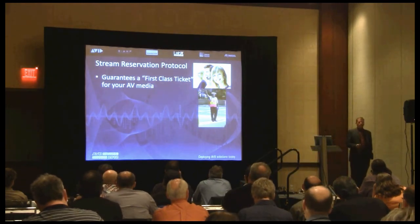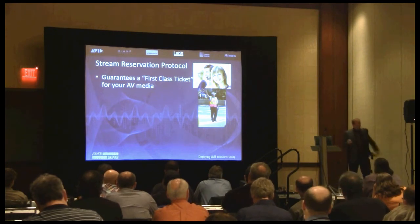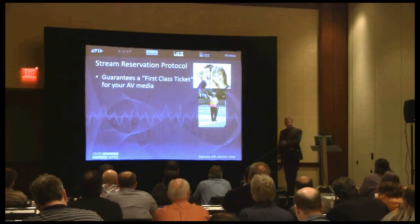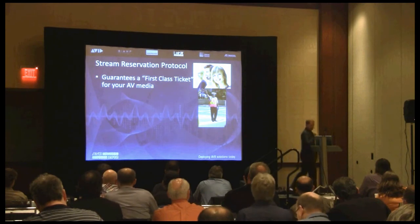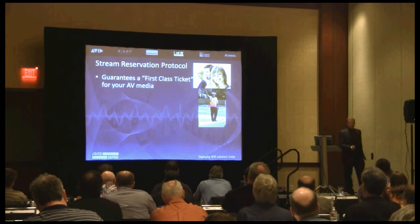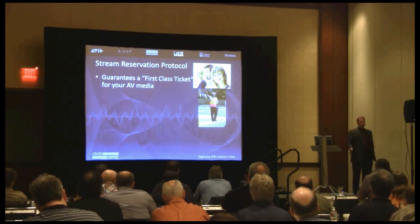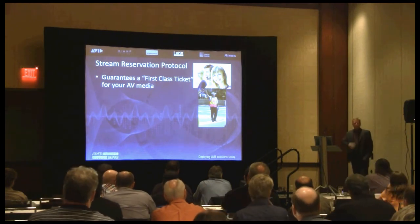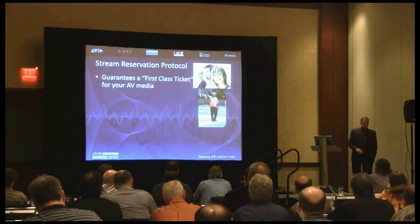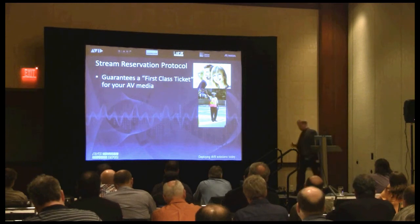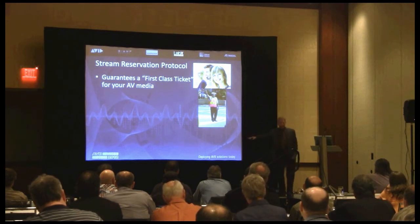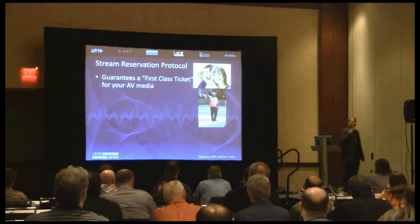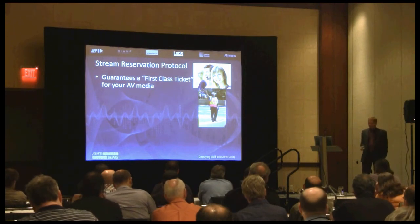SRP is also the traffic cop, sitting there watching all the traffic, letting your AVB-prioritized traffic go and telling that other legacy traffic it's going to have to wait. When there's time and the street's clear, go right ahead. It's actively policing your network against rogue traffic. How many times have you had a nightmare call because the system was working great and all of a sudden something went wrong? You look and look and find that one guy who plugged something into the network — just trying to do a firmware update on his iPad — and that was messing with your system.